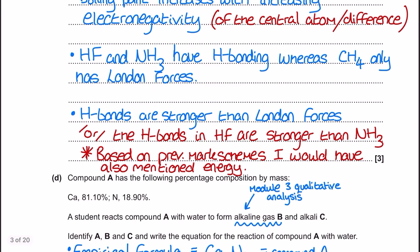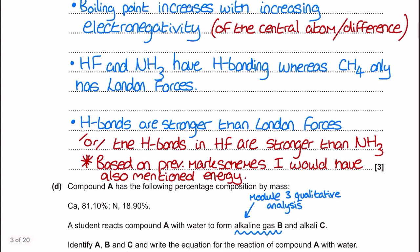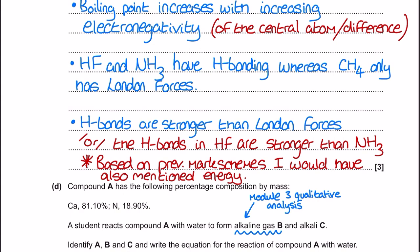I make a comment about hydrogen bonds being stronger than London forces. You might also have talked about how, even though ammonia and hydrogen fluoride both have hydrogen bonds, HF has stronger hydrogen bonds. I've included a little extra comment at the bottom marked by an asterisk. In previous mark schemes, you're often expected not only to say hydrogen bonds are stronger than London forces, but also to state that therefore more energy is required to break hydrogen bonds compared to London forces. I would personally include this point based on my experience with other mark schemes.